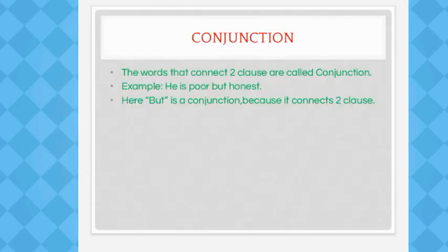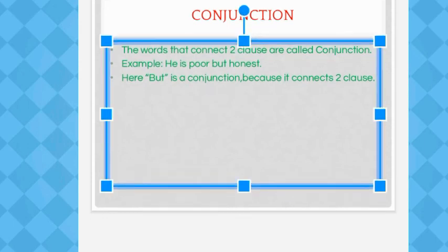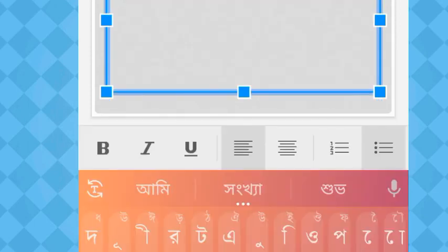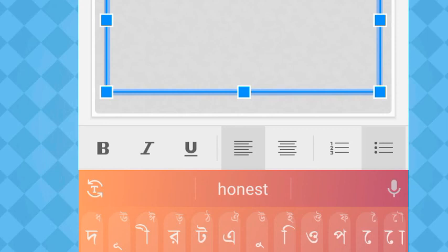A conjunction is a word that connects clauses. For example, 'he is poor but honest' — here 'but' is a conjunction that connects the two parts of the sentence: he is poor, but he is honest.